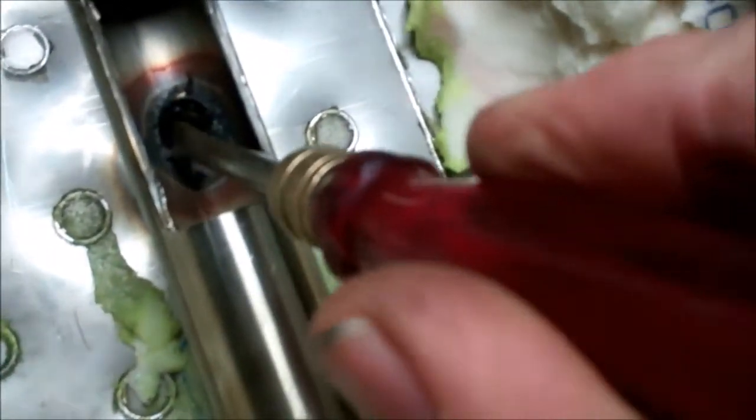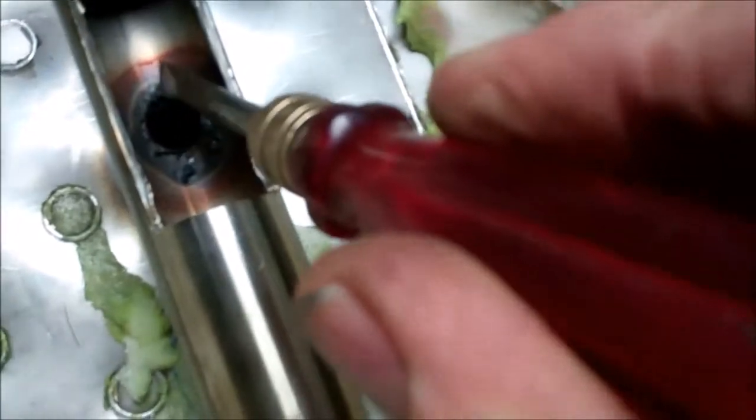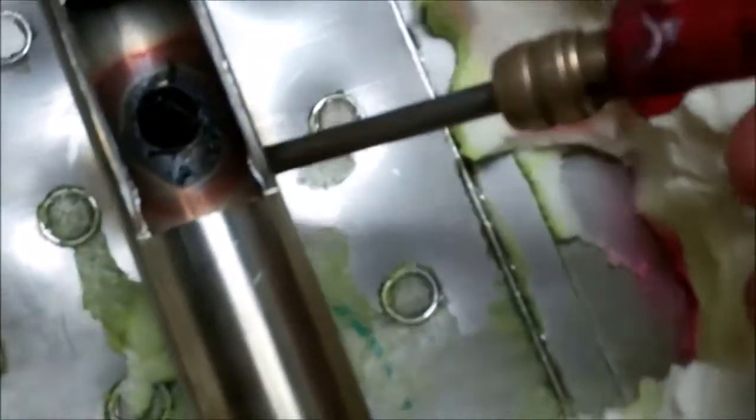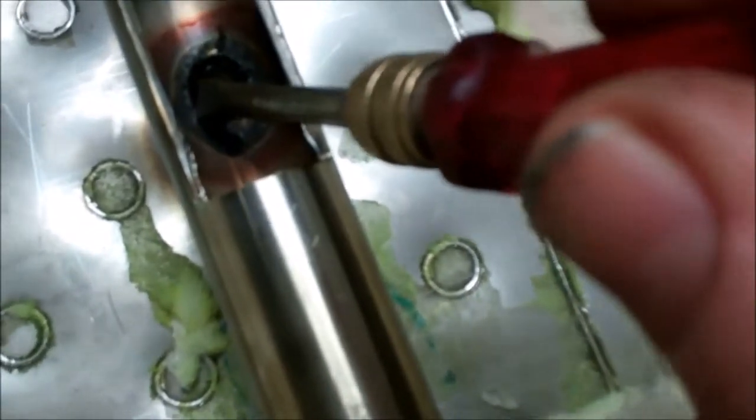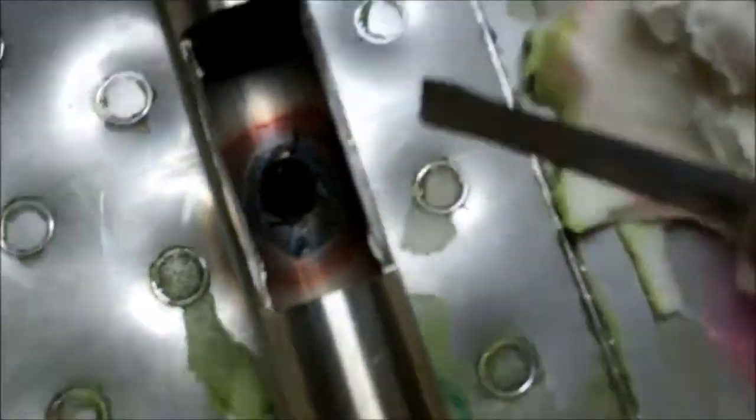The first job is to grind this weld penetration away. This is the penetration that's come through the pipe from the weld on the top there. So I've got to grind that away. It's all oxidized penetration. And then I shall have to put some fluorescent tracing dye to find out where the crack is.